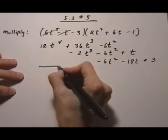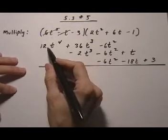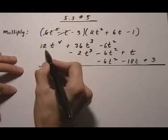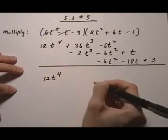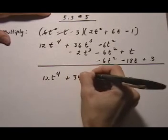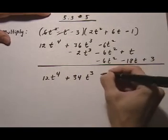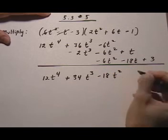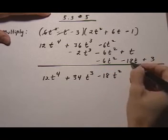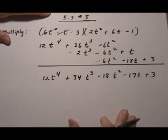And now we're going to collect like terms. We're going to add the pieces together that have like terms. 12t to the fourth comes down. No like terms. 36 take away 2 is plus 34t cubed. Then we have 3 minus 6s here, so this could be minus 18t squared. Plus 1 minus 18 is minus 17t. Bring down the plus 3. And you have your answer.